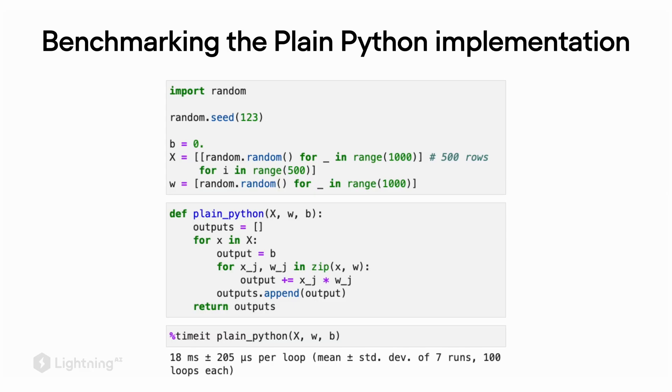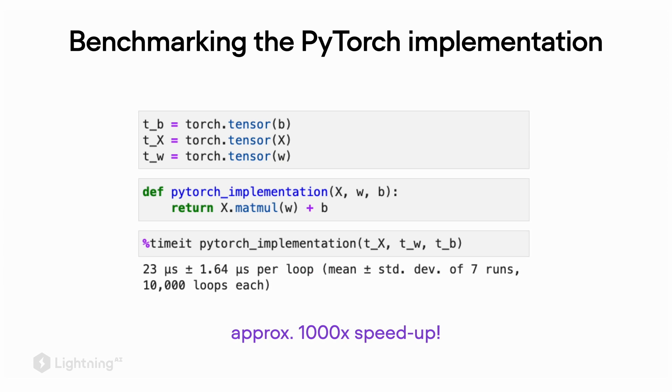So now if we use our handy timeit function again in a Jupyter notebook, we see that the Python version takes about 10 milliseconds to run. Comparing it to our PyTorch matrix multiplication, we can see that the PyTorch approach is thousand times faster, which is huge. I hope this speed up clarifies why we actually prefer using PyTorch over plain Python when we implement deep neural networks.